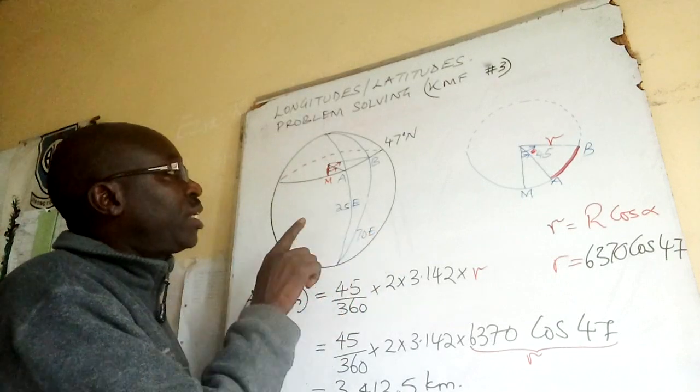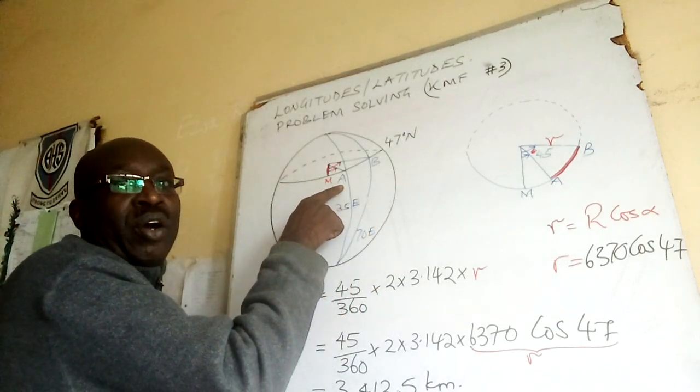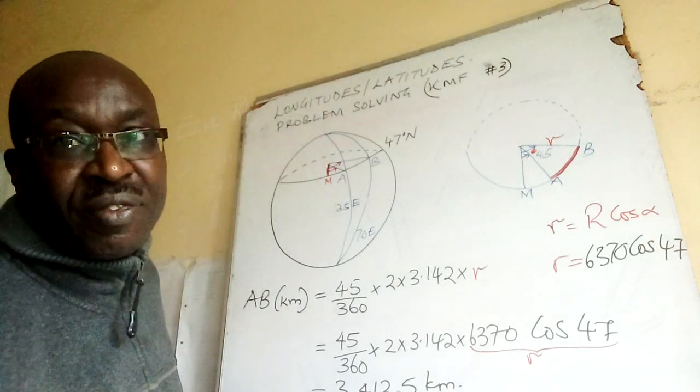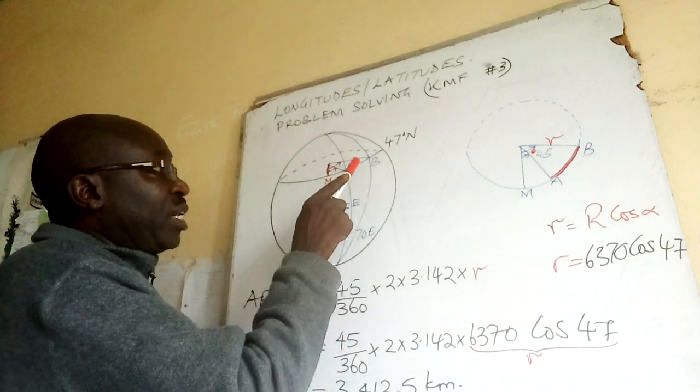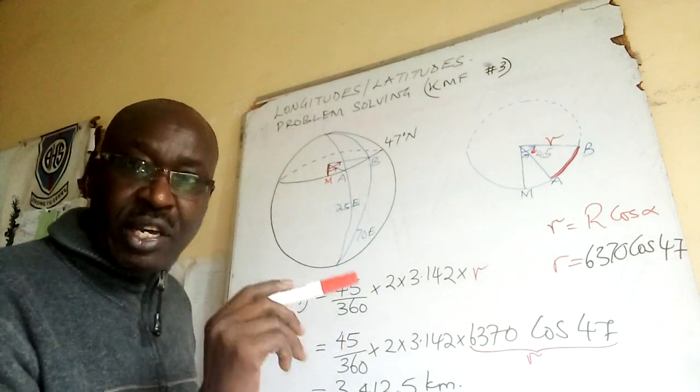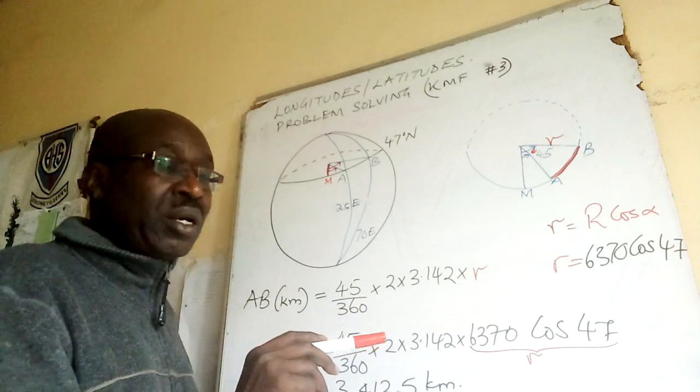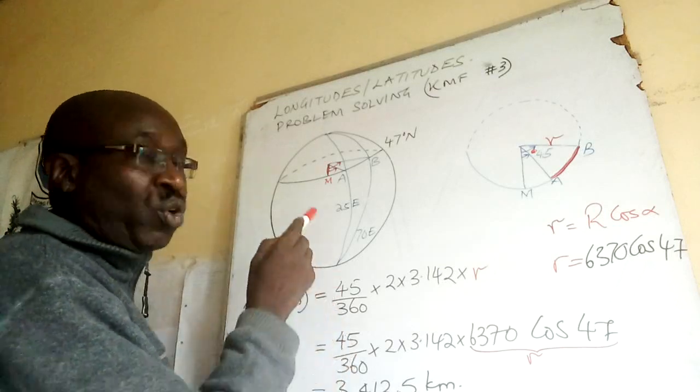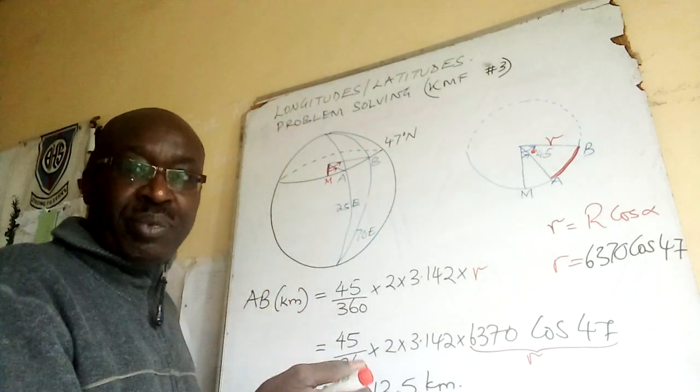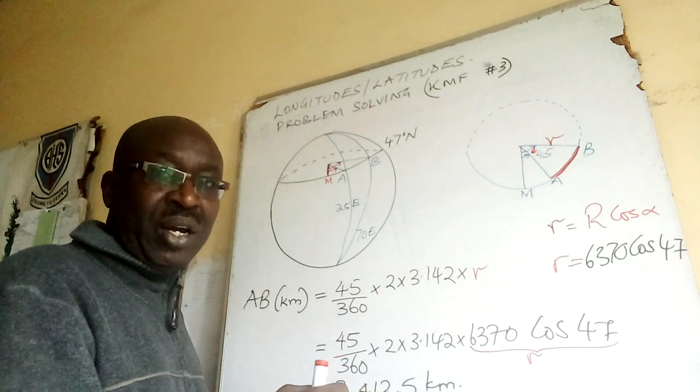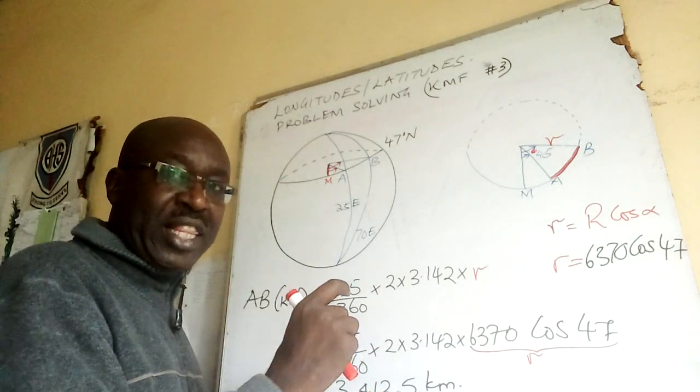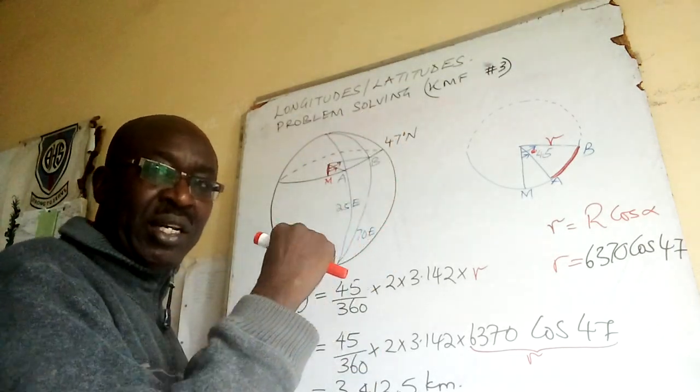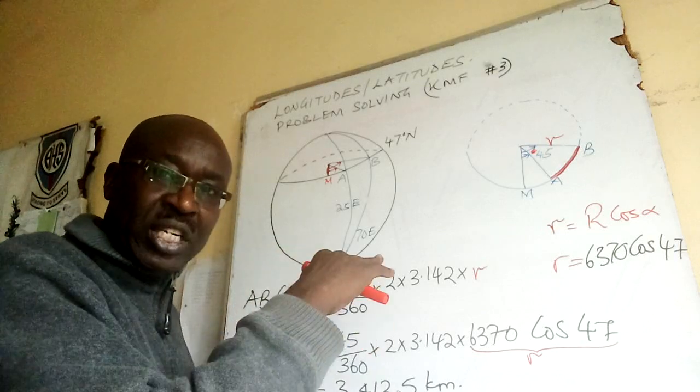It says that there is town A on longitude 47 degrees north and 25 degrees east. And there is another town B on the same latitude 47 degrees north but 70 degrees east. If you draw that latitude, remember we said anything north is on the northern side, and south is on the southern hemisphere.